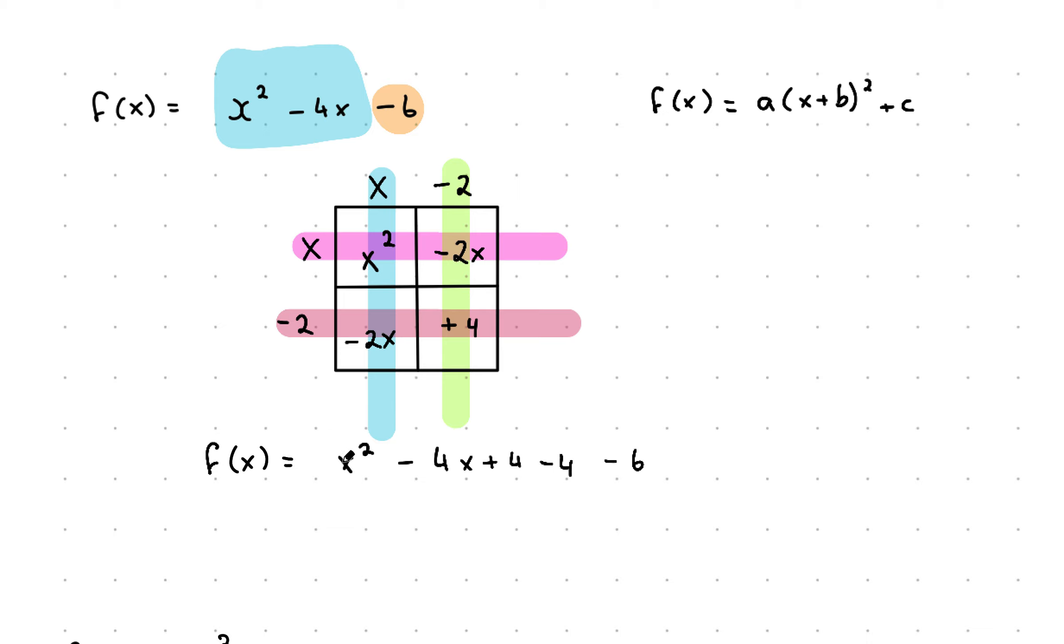So I now have f of x is equal to x squared minus 4x plus 4 minus 4 minus 6. Here's the next thing. This x squared minus 4x plus 4, that came from a square of side length x minus 2 by x minus 2. In other words, this was created by x minus 2 squared. So that piece there, looking at it geometrically, it's a square of side length x minus 2 by x minus 2. And then over here, we've got minus 4 minus 6, and I get minus 10. And this is our completed square format. And it gets its name from the fact that we're literally filling in the blanks of that square.